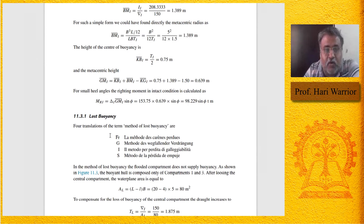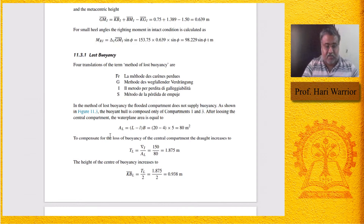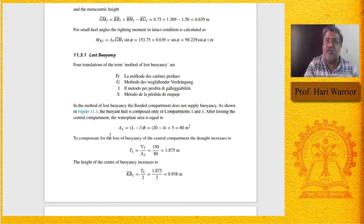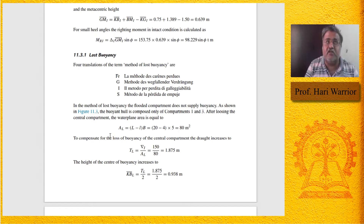Now let us do the method of lost buoyancy. When a compartment gets flooded, water comes up to the level of the water plane area. At that water plane region, you now have water — which means that much area is removed from the calculation of the water plane area. The water plane area changes, the moment of inertia (second moment of area) of the water plane changes. That is what we have to account for in the method of lost buoyancy.